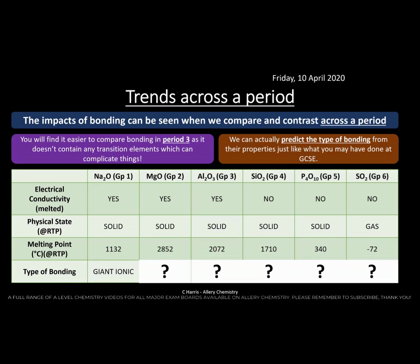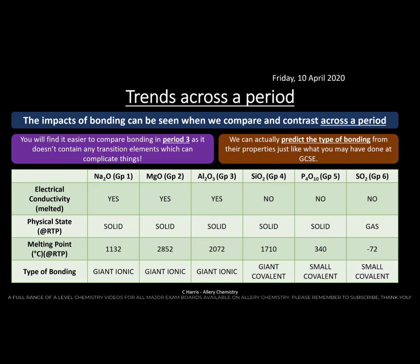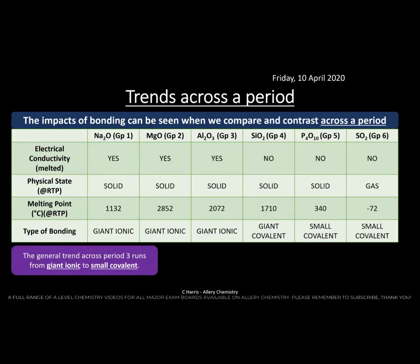So the first oxides — sodium oxide, magnesium oxide, aluminium oxide — are giant ionic structures, as expected: they conduct electricity when molten and have high melting points. Silicon dioxide doesn't conduct electricity when molten but has a very high melting point, suggesting a giant covalent structure. Phosphorus oxide shows a significantly lower melting point, indicating a simple (small) covalent structure. Sulfur dioxide is a gas at room temperature — further confirming simple covalent.